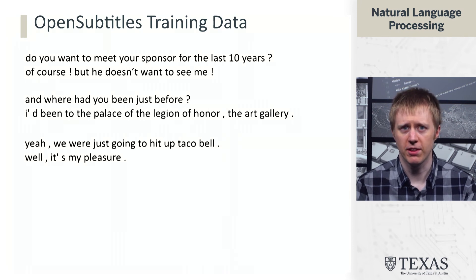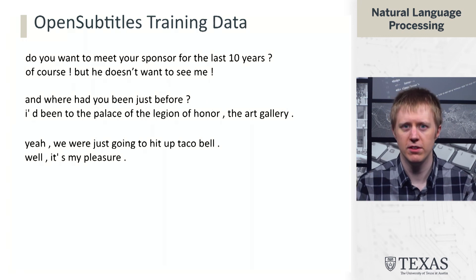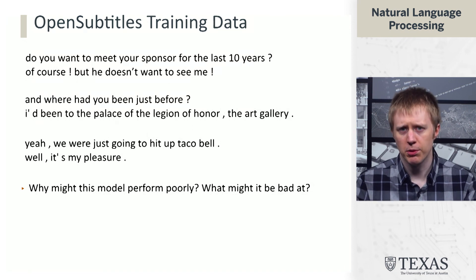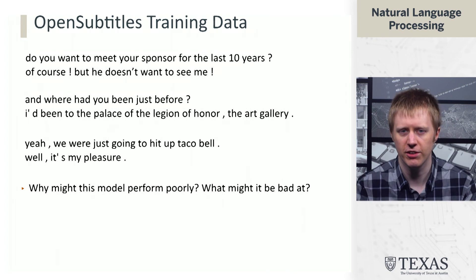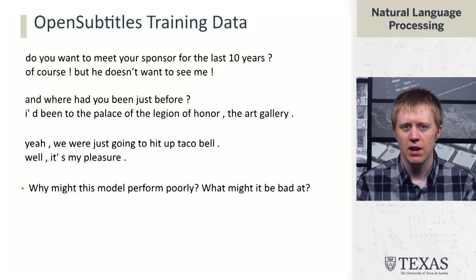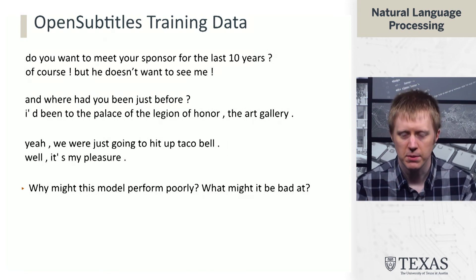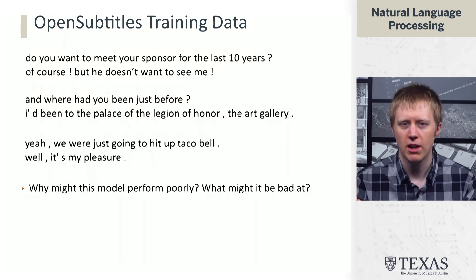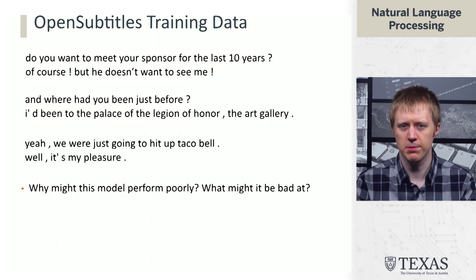There are reasonable dialogues in this data, like 'Do you want to meet your sponsor for the last 10 years?' — 'Of course, but he doesn't want to see me.' But there are a lot of problems with training on this data. We're trying to use these subtitles ungrounded in the context of the scenario, and sometimes it's a multi-party conversation. These models train on fundamentally noisy data because without context, generating something as specific as 'the palace of the legion of honor' is very challenging.